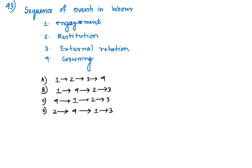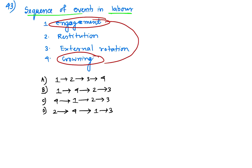Question number 43: sequence of events in normal labor. You have to arrange them in order: engagement, restitution, external rotation, and crowning. Engagement is the first event that happens during labor, followed by crowning. After crowning there is restitution, and following restitution there is external rotation.